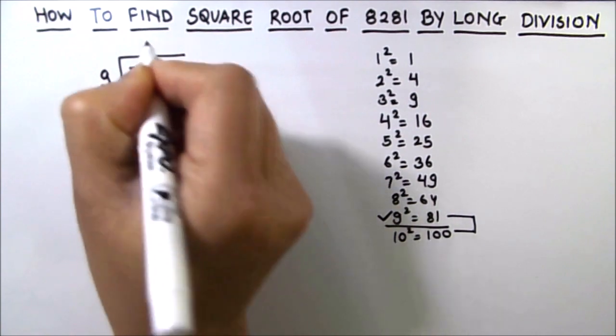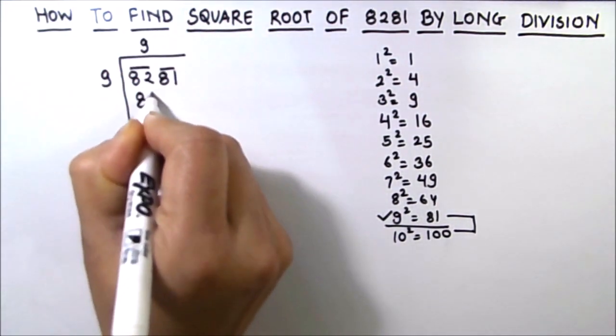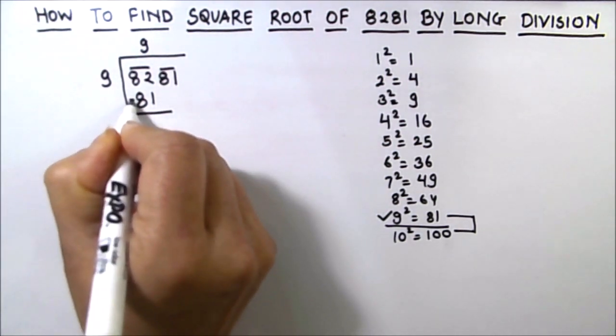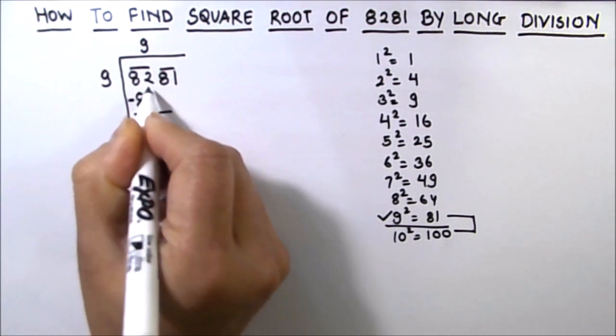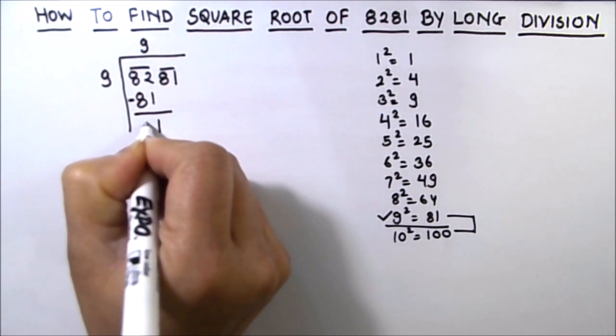So 9 times 9 equals 81, and we are going to subtract the two numbers. So 2 minus 1 is 1, and 8 minus 8 is 0.